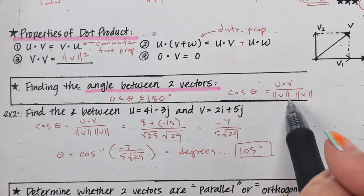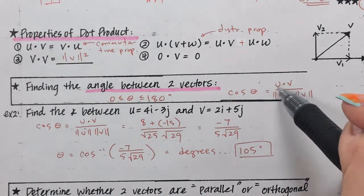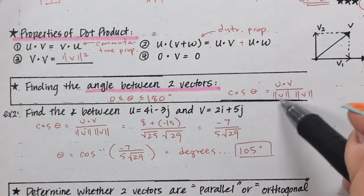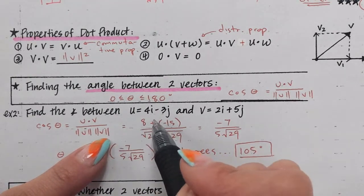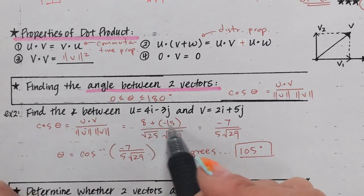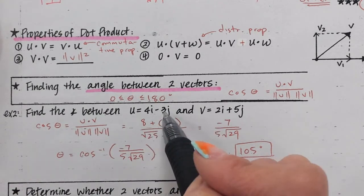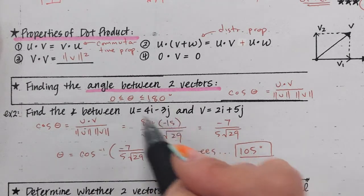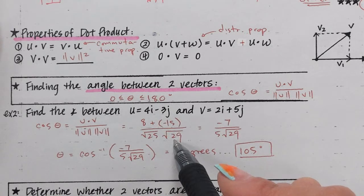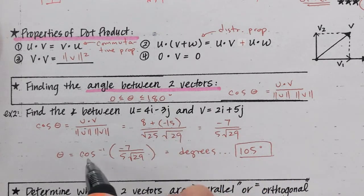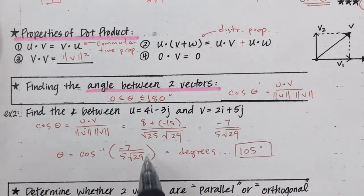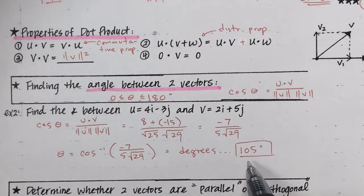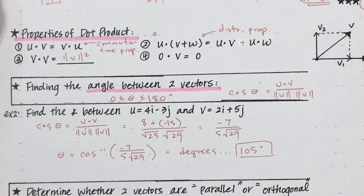The formula looks crazy but it's really easy to remember — it's just the dot product of the two vectors divided by the magnitude of each. You take the dot product on top, and on the bottom you take the magnitude of U times the magnitude of V. You can stop there and do cosine inverse of this, or simplify a little more. Make sure you're in degrees. So then you get 105 degrees — make sure you can put that into a calculator and get that answer.